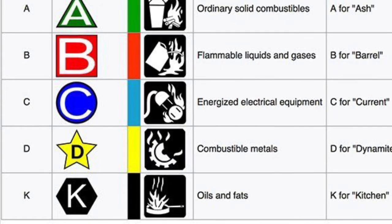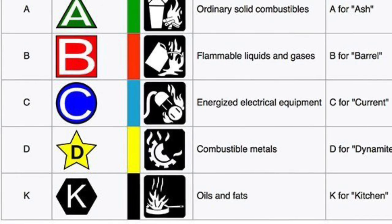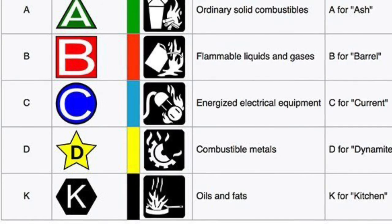A class D fire involves combustible metals such as magnesium. A class K fire involves oils and fats such as cooking oil.